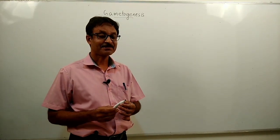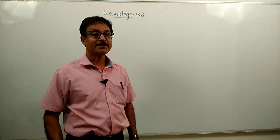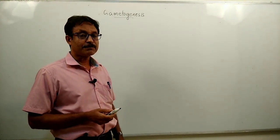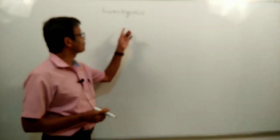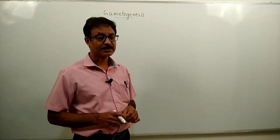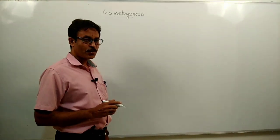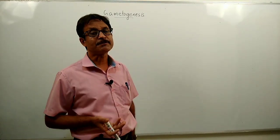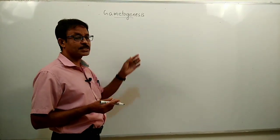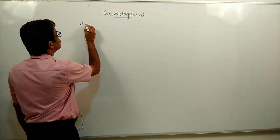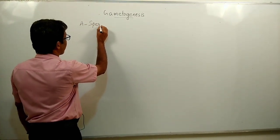Good morning. We are starting with the different events in reproduction. The first event is gametogenesis — the formation of gametes in the sex organs, that is, the primary sex organs. Thus, it includes the formation of sperm and the formation of ova. So gametogenesis is reducible to spermatogenesis and oogenesis.